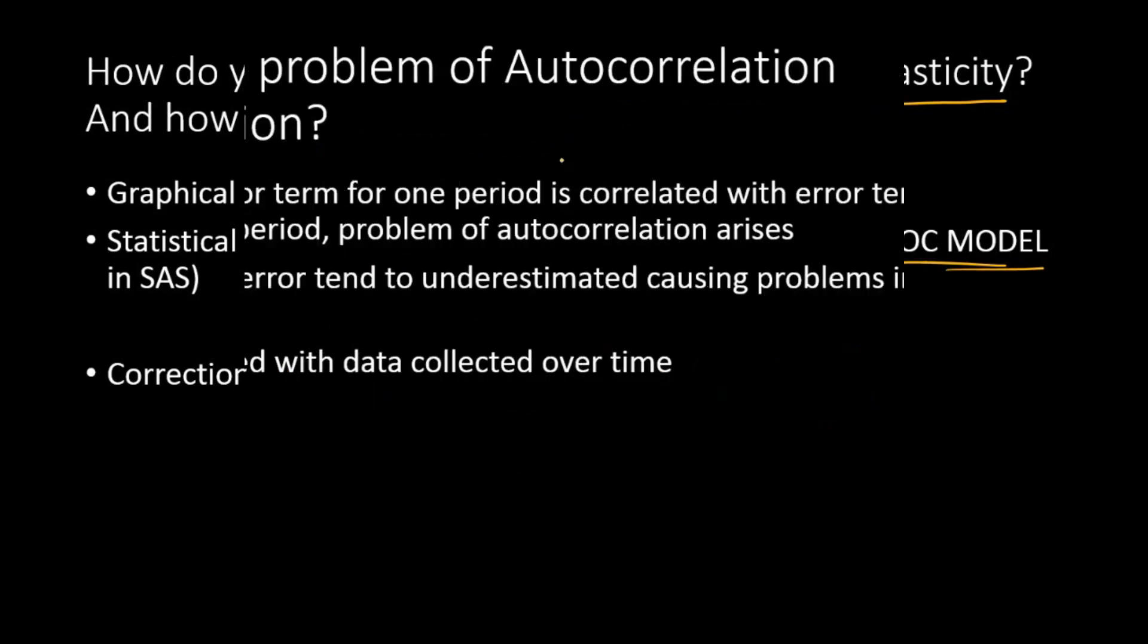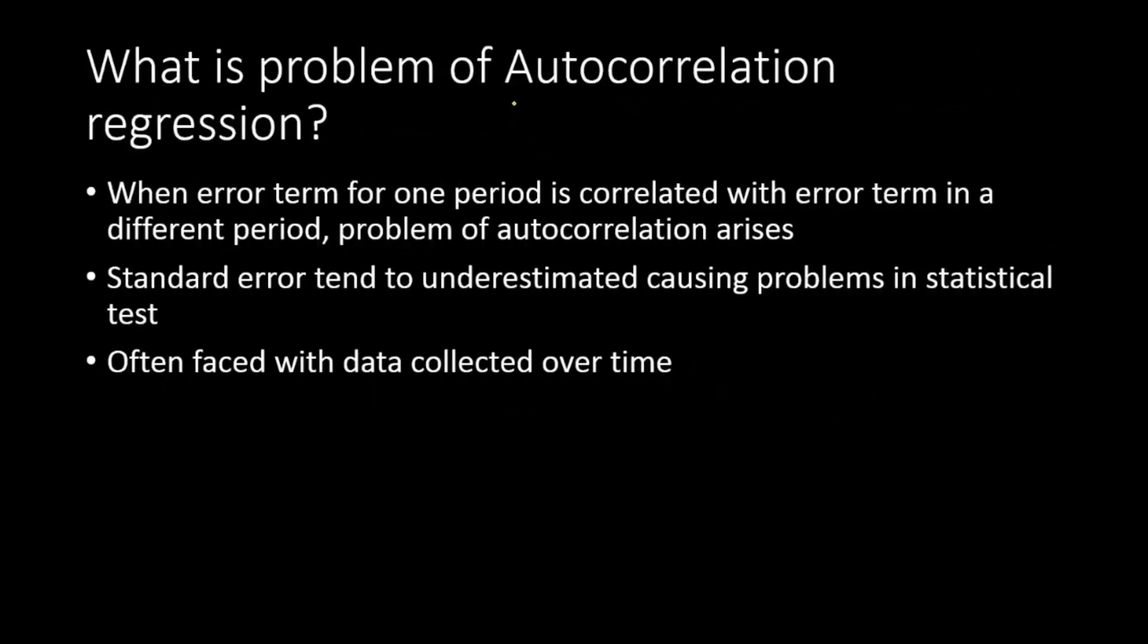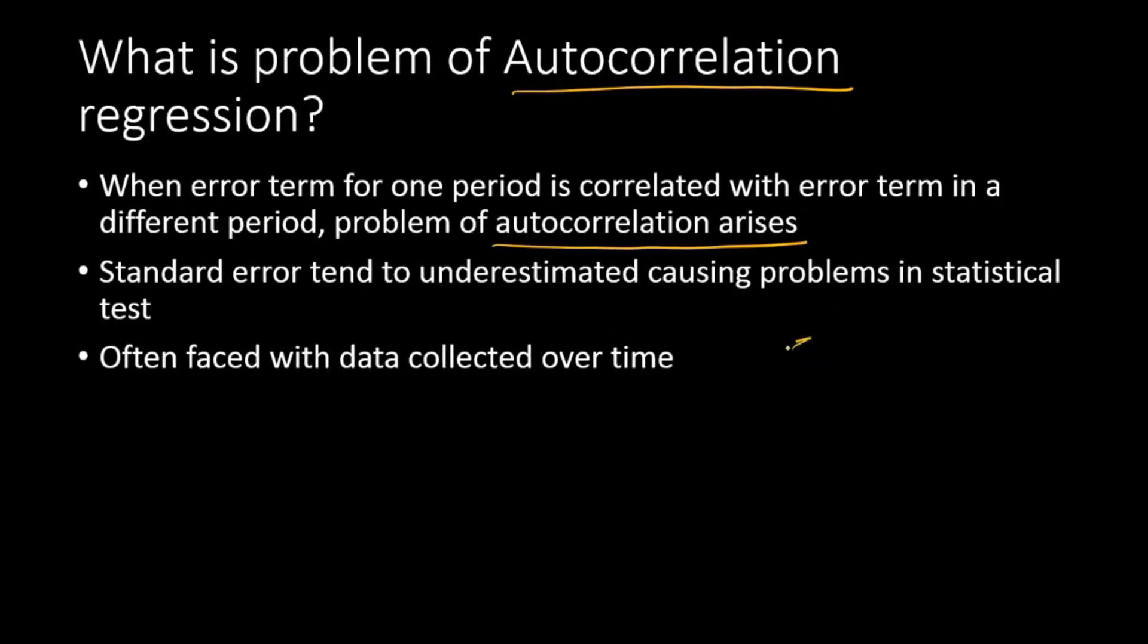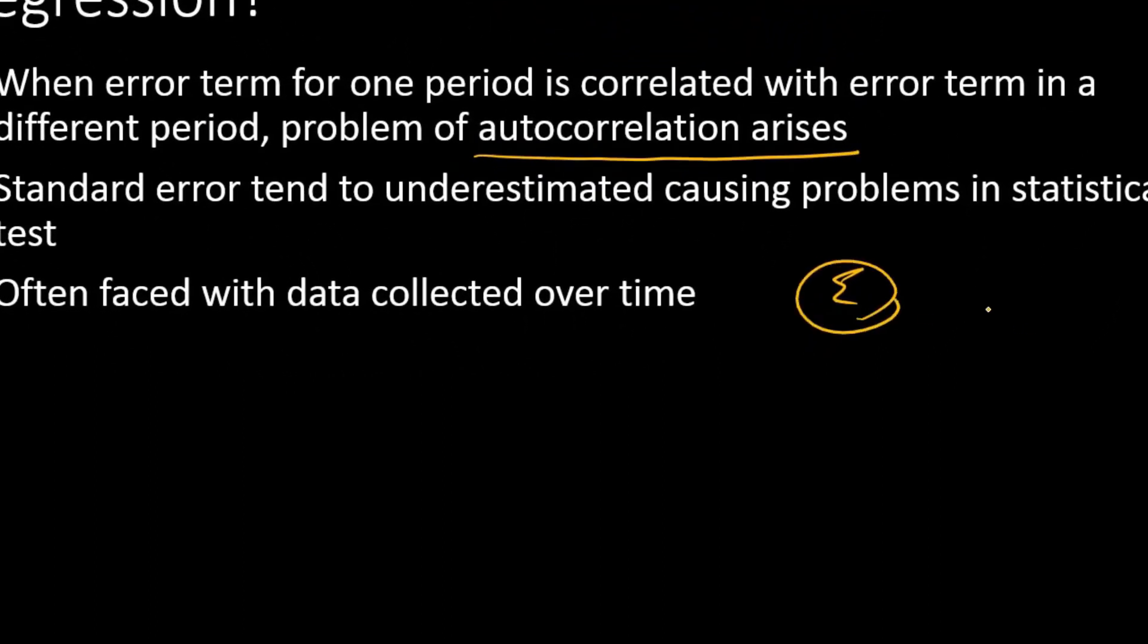The next question is: what is the problem of autocorrelation in regression? When error terms for one period are correlated with error terms in different periods, we call this autocorrelation. This is a problem because we expect that the error terms should not be correlated. This is a problem in time series data when we have data for two or more time periods. If error t is correlated with error t minus 1, then we say there is autocorrelation.